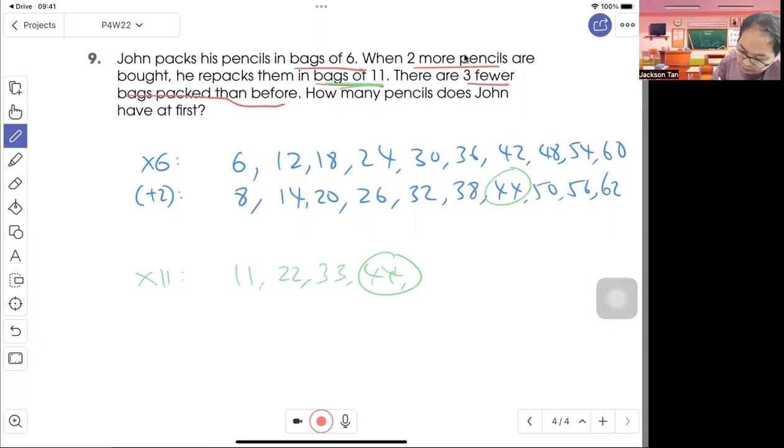So we check, so total here need how many bags. 1, 2, 3, 4, 5, 6, 7, seven bags. And here need 1, 2, 3, 4, four bags. And this is three fewer bags than before. So they ask how many pencils does John have at first. So make sure you choose your answer as 42 because at first there are 42 pencils John have at first.